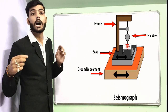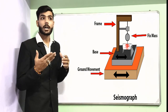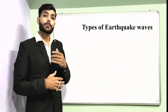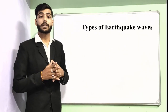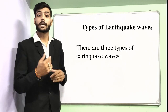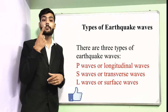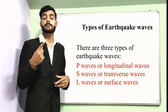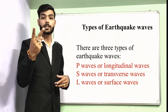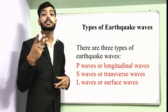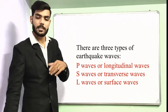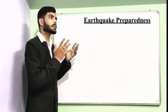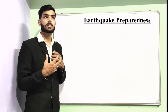There are three types of earthquake waves: P waves, S waves, and L waves. P waves are longitudinal waves, S waves are transverse waves, and L waves are surface waves — named according to their nature of work.